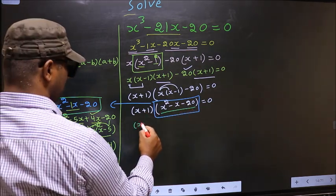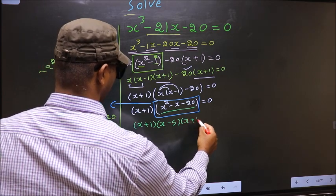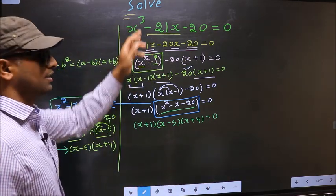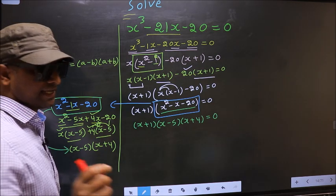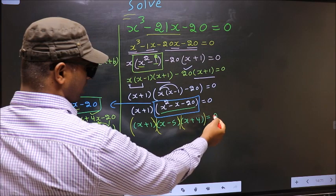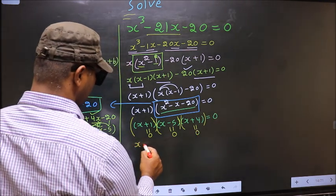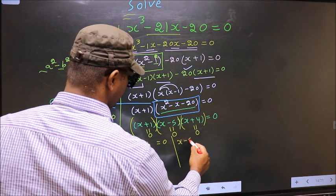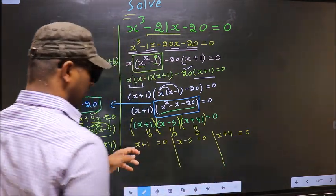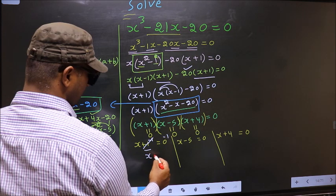So the equation becomes (x + 1)(x - 5)(x + 4) = 0. We have a product of brackets equal to 0, so we equate each bracket to 0. That is x + 1 = 0, x - 5 = 0, x + 4 = 0. From x + 1 = 0, subtract 1 from both sides, you get x = -1.